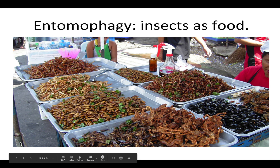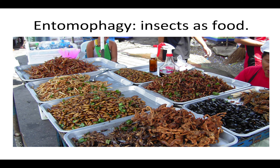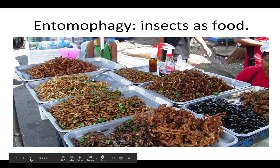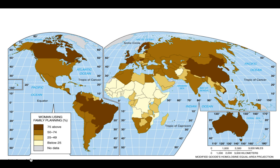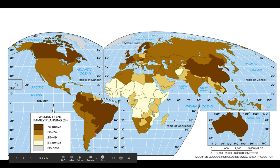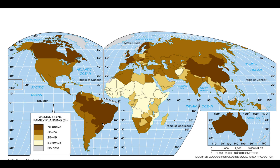Entomology looks at alternative food supplies, as seen in pictures of various insects. A map shows where family planning is endorsed — dark brown indicating 75% or above — and where family planning has not taken a stronghold, particularly in sub-Saharan Africa, due to cultural values and beliefs.